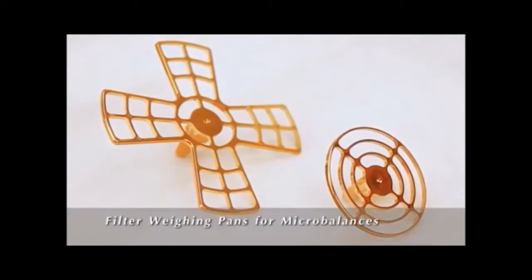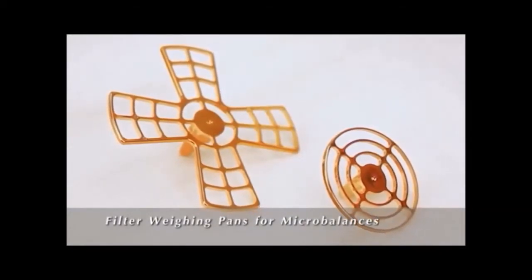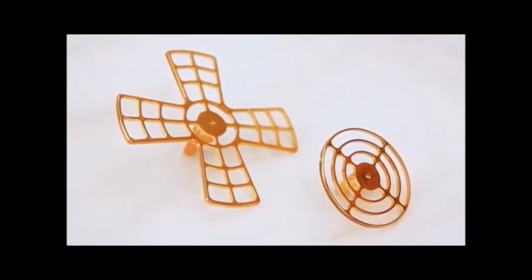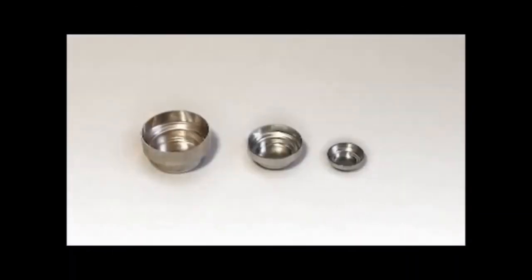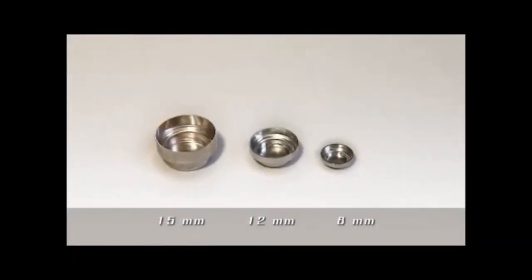The BM20 and BM22 also come with two extra pans, specially designed for filter weighing, and a supply of disposable weighboats in three different sizes.